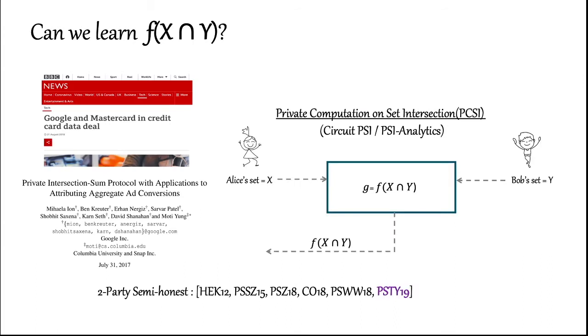More generally, we want robust protocols that let Alice and Bob compute any f over the intersection and hide all other information. We call this problem private computation on set intersection and it has been studied in the following works. The state of the art construction was proposed by Pincus, Schneider, Kuchenko and Yanai in 2019. I will refer to their construction as PSTY protocol for the rest of the talk.